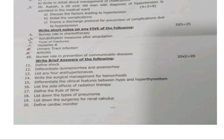Continuing brief answers: 13th — list any four antihypertensives; 14th — write the surgical management for hemorrhoids; 15th — differentiate the clinical features between hypo and hyperthyroidism; 16th — list the side effects of radiation therapy; 17th — define the rule of nines; 18th — list down the types of pneumonia.